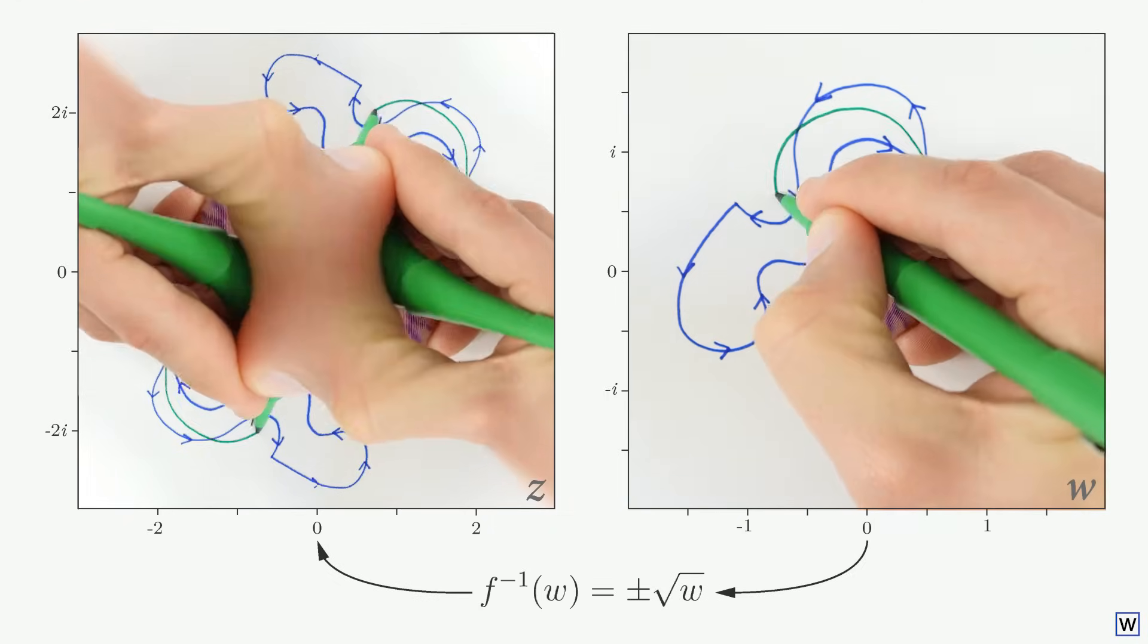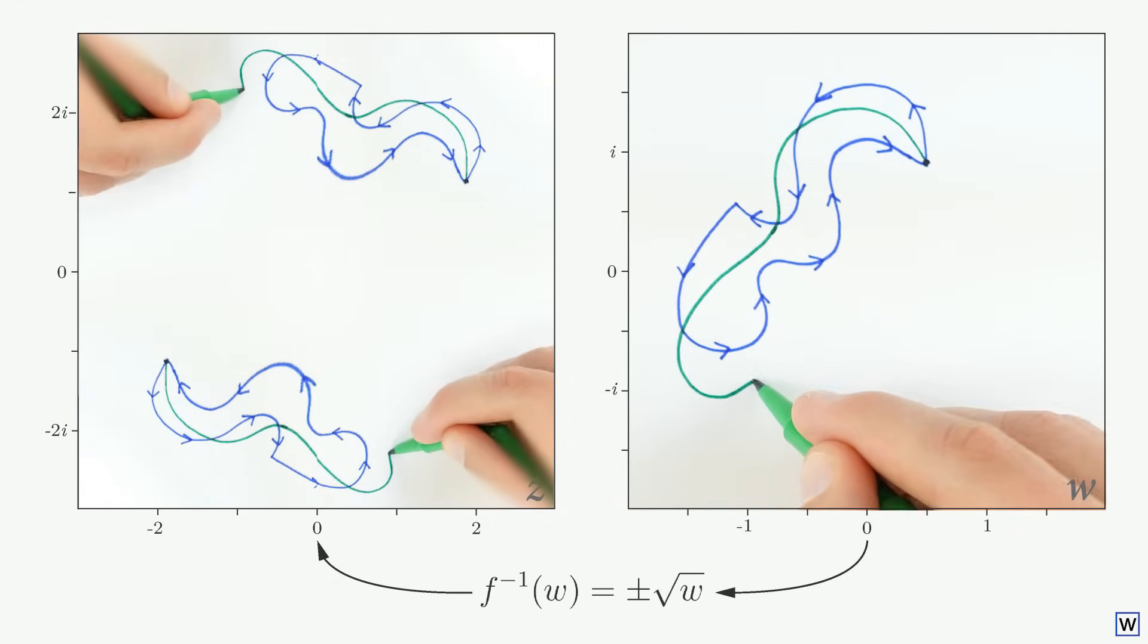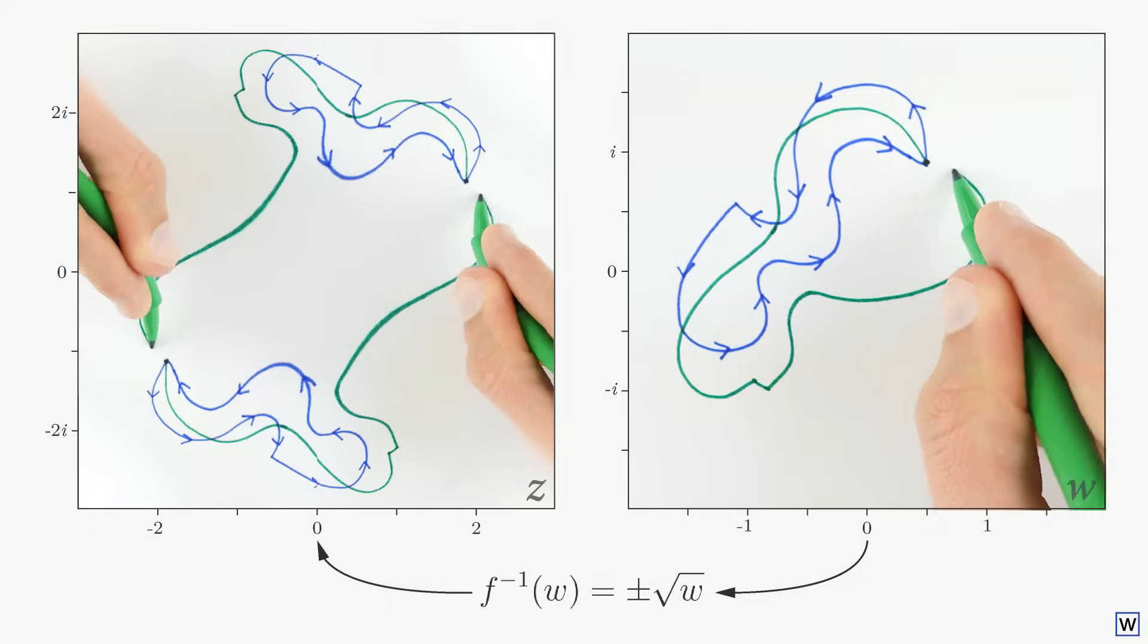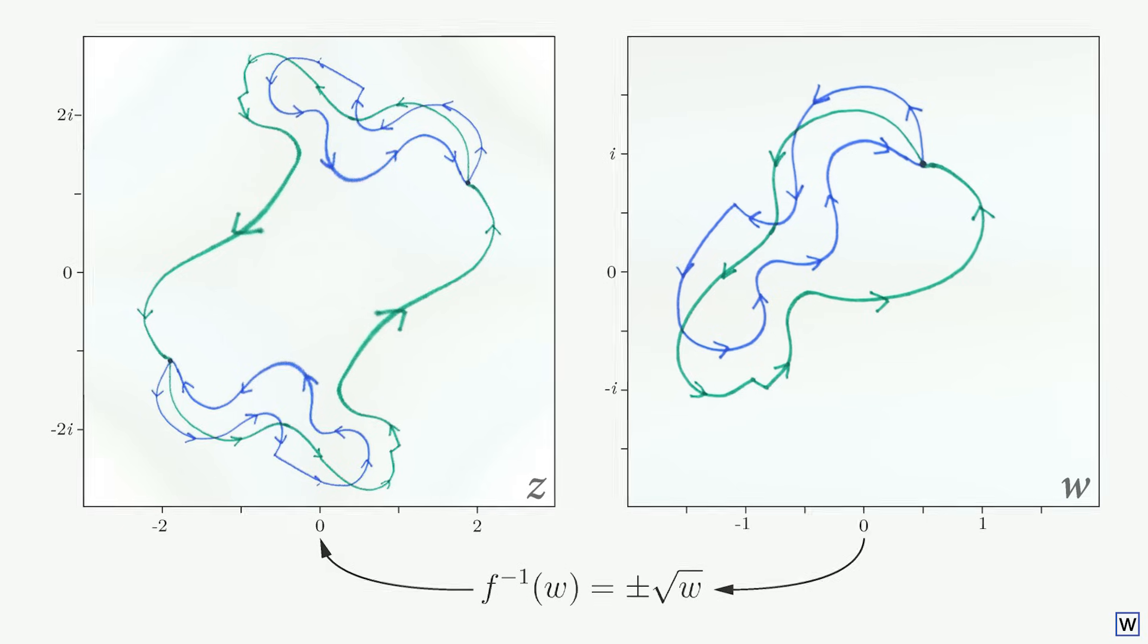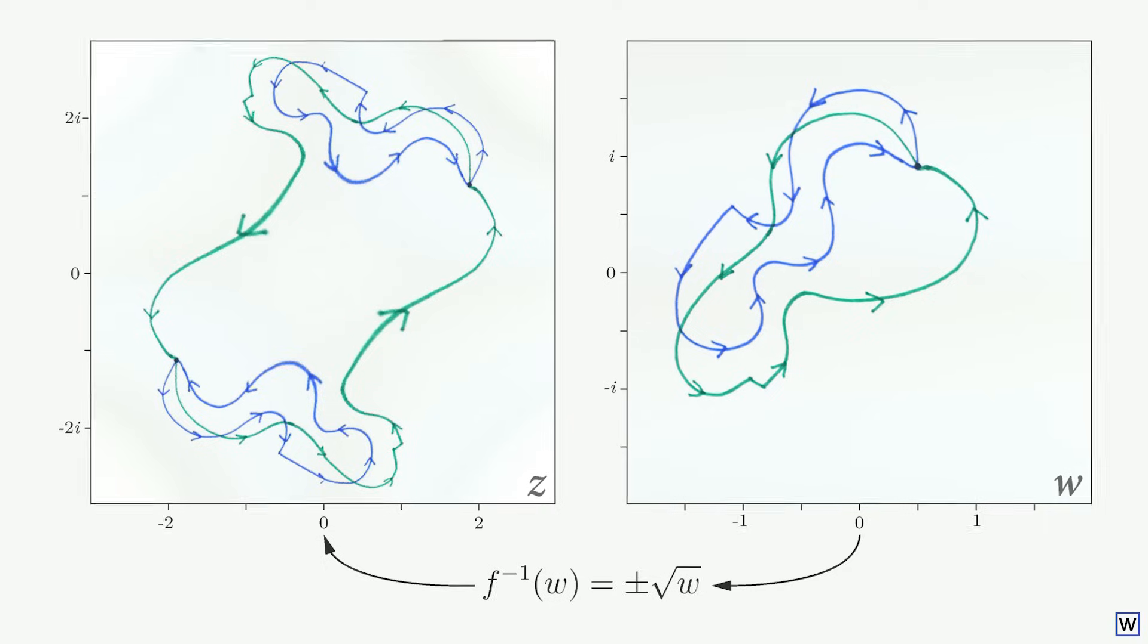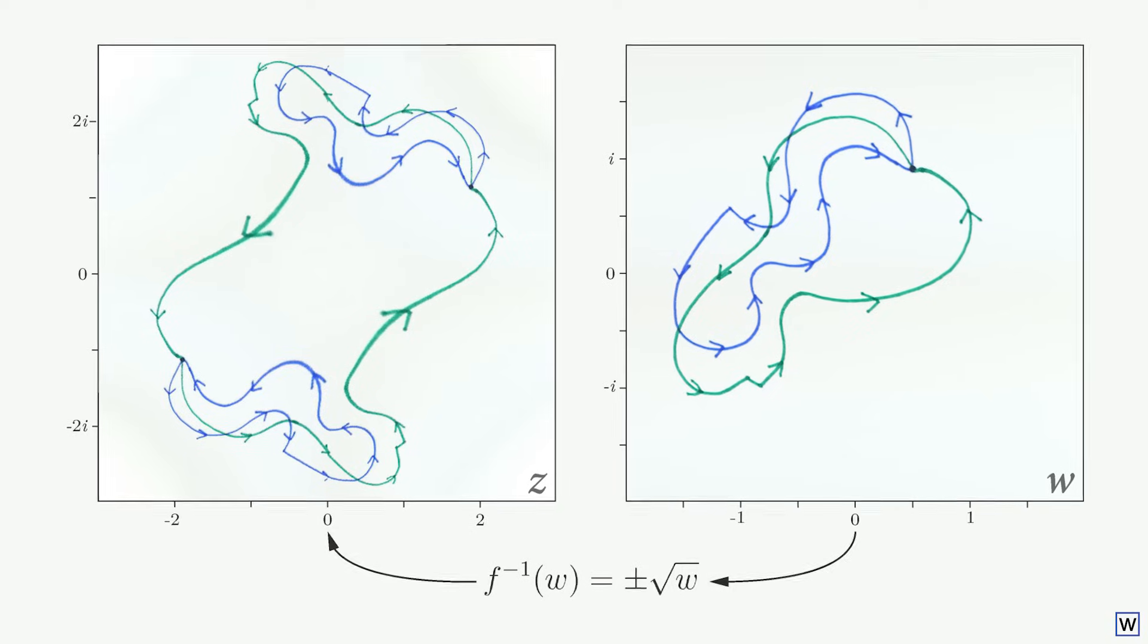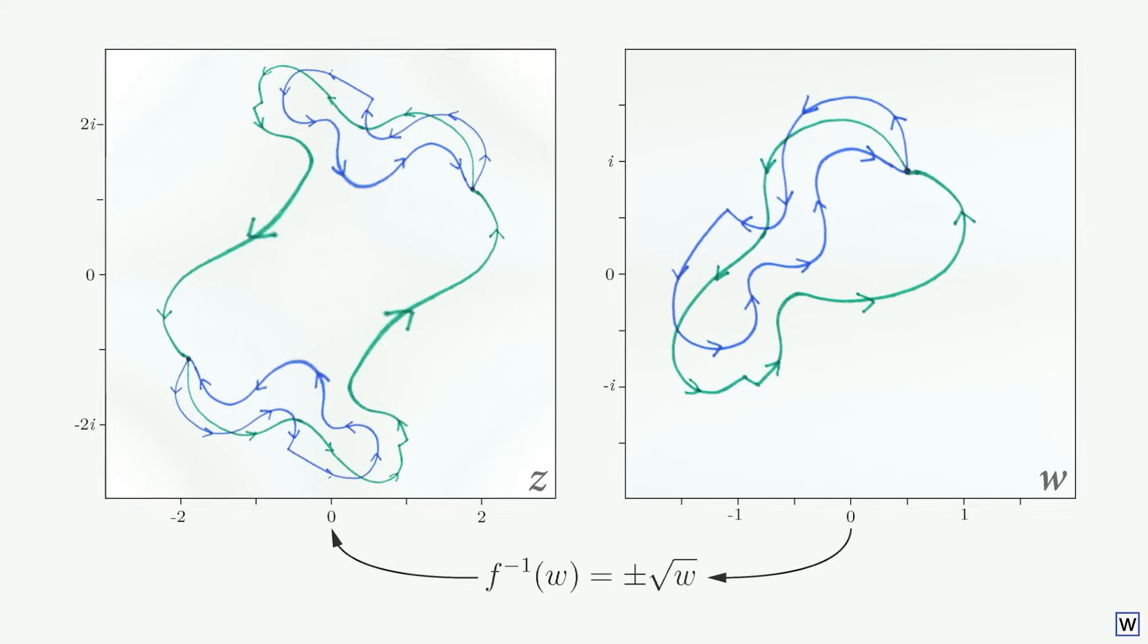But if we change our path a little, something weird happens. Our w path returns to where we started, but our z paths don't. Our z values jump to a whole new part of the plane. Somehow we've wandered our way into a completely new part of our multi-function. So it seems that some paths on w lead us back to where we started, but others don't. What could be going on here? How is the complex landscape of our multi-function taking such similar paths in such different directions?